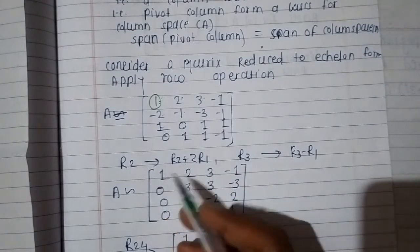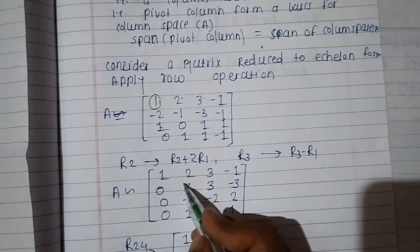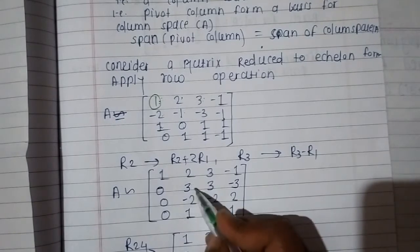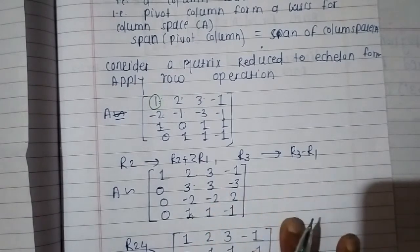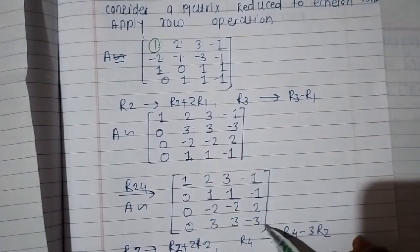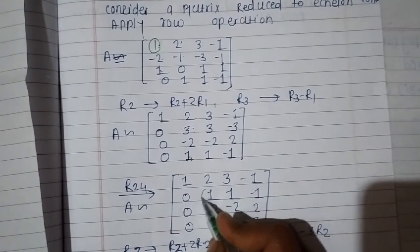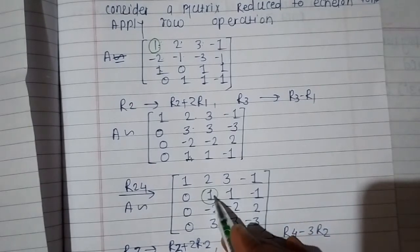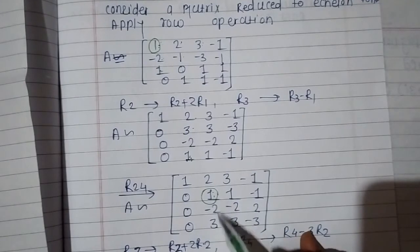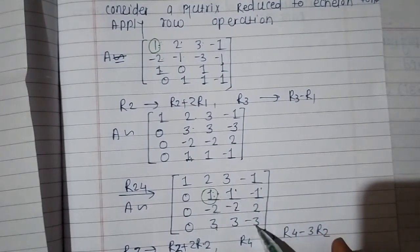After these row operations, the first leading one has zeros below it. We then obtain a leading one in the second row. We apply further row operations to eliminate entries below the second pivot. Performing R4 minus 3 times R2: minus 2 plus 2 is 0, 3 minus 3 is 0, minus 2 plus 2 is 0, 2 minus 2 is 0, 3 minus 3 is 0, minus 3 plus 3 is 0. R3 and R4 become completely zero rows.